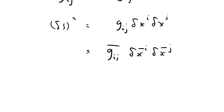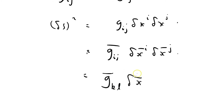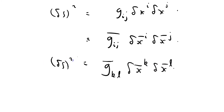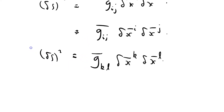Both of these are summed over i and j, but that's a dummy index — I've called it i and j, but I can call it anything. So I can call it k and l in the barred system: Ḡkl δx̄ᵏ δx̄ˡ. And this is again ds². All these different lines are equal to one another.